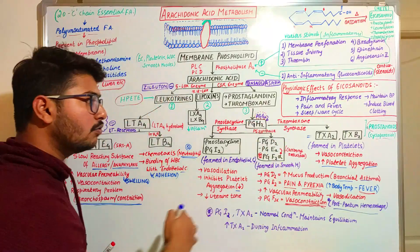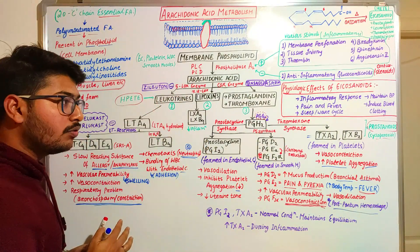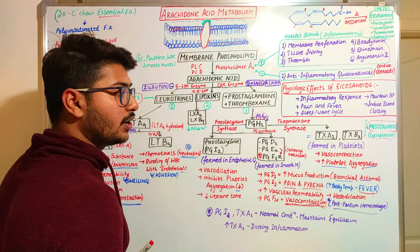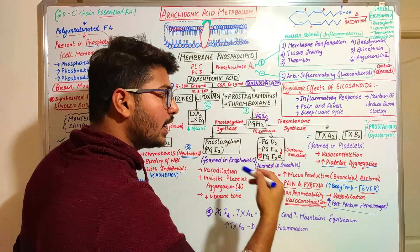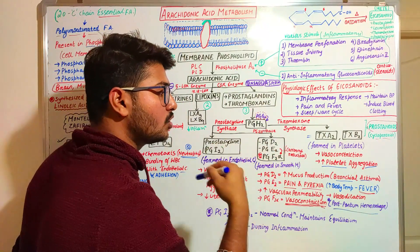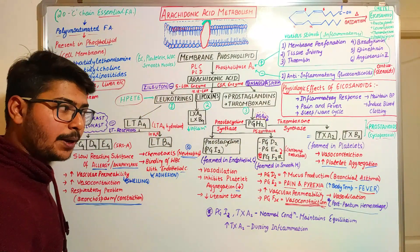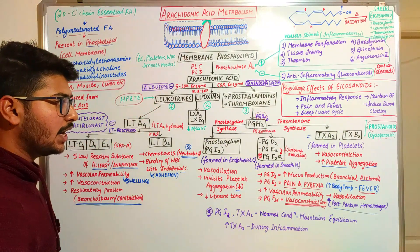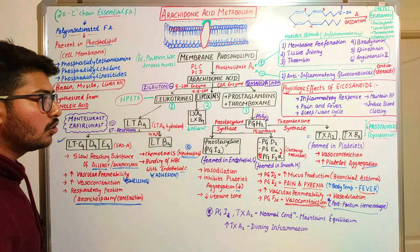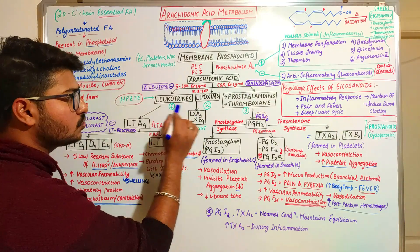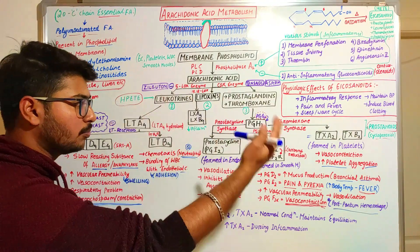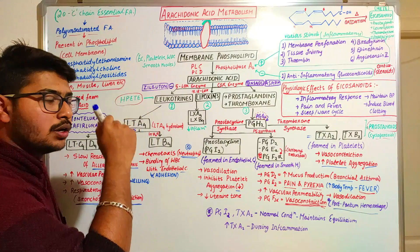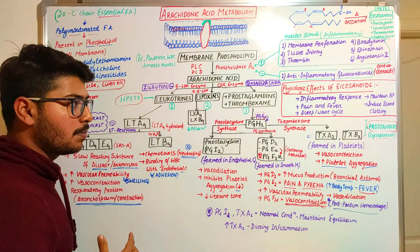Thromboxane A2 and thromboxane B2 are formed in platelets and have the potential to cause vasoconstriction and increase platelet aggregation. Thromboxane A2 and prostacyclin I2 contradict each other: thromboxane increases platelet aggregation while prostacyclin inhibits it. This balance prevents platelet aggregation in normal conditions. When inflammation increases, thromboxane A2 rises and stimulates blood clotting.